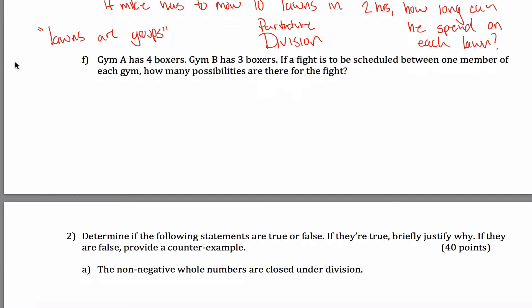And I guess you could use process of elimination, but I won't. This says, gym A has four boxers, gym B has three boxers, if the fight is to be scheduled between one member of each gym. This is our Cartesian product. You can think about it like the first set are the boxers from gym A, the second set are the boxers from gym B. And what you're looking for are ordered pairs, one element from set A and one element from set B, Cartesian product.